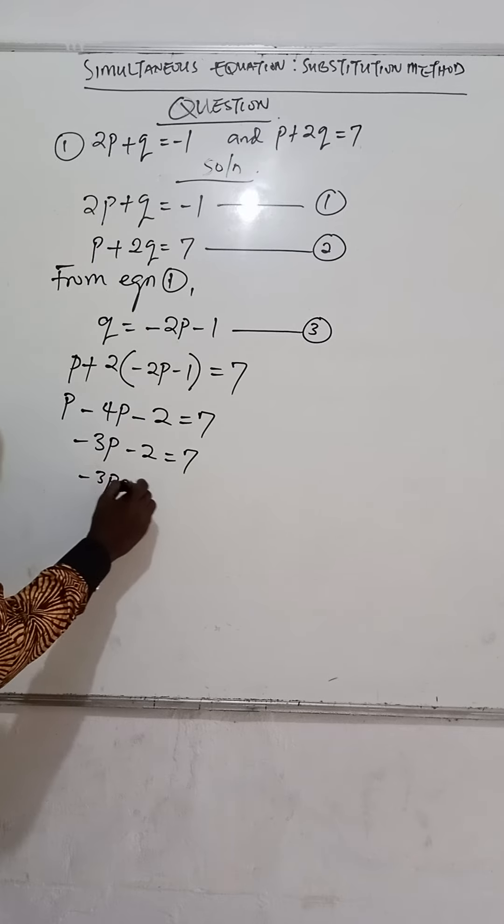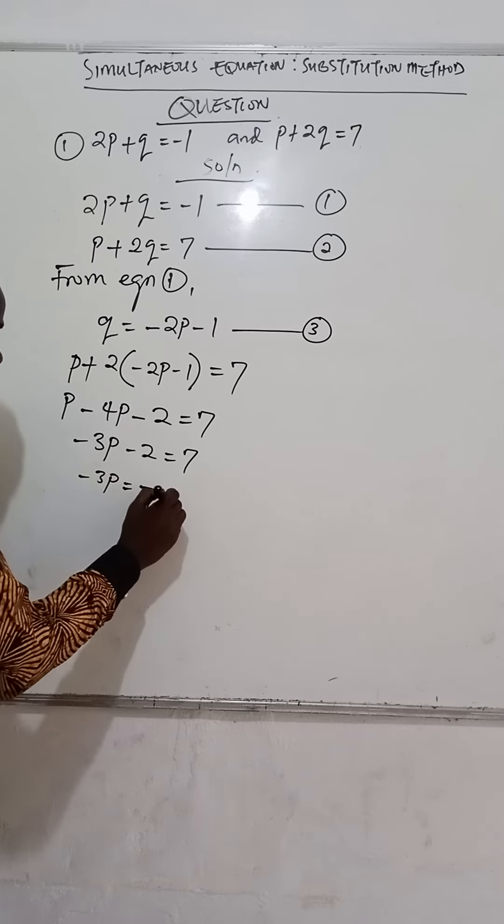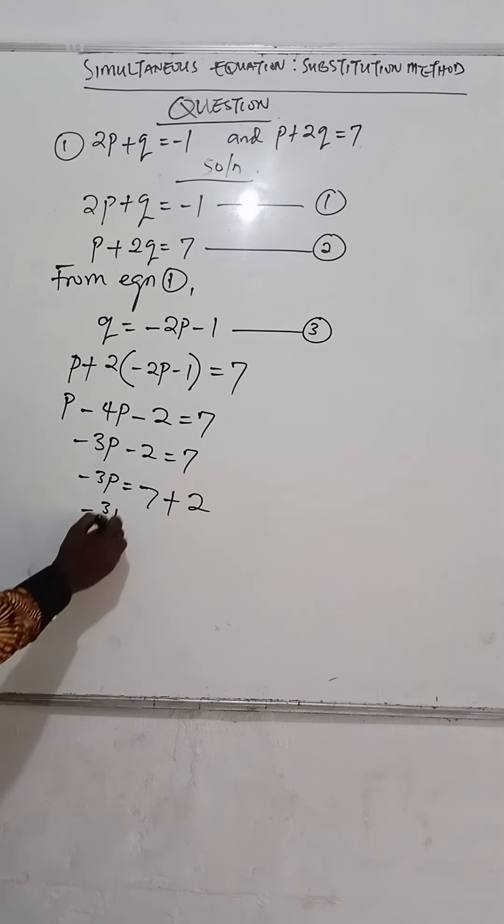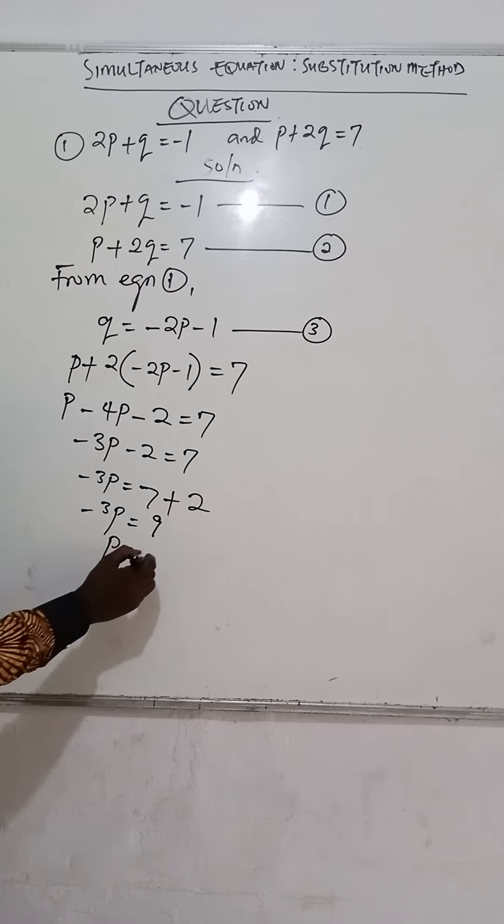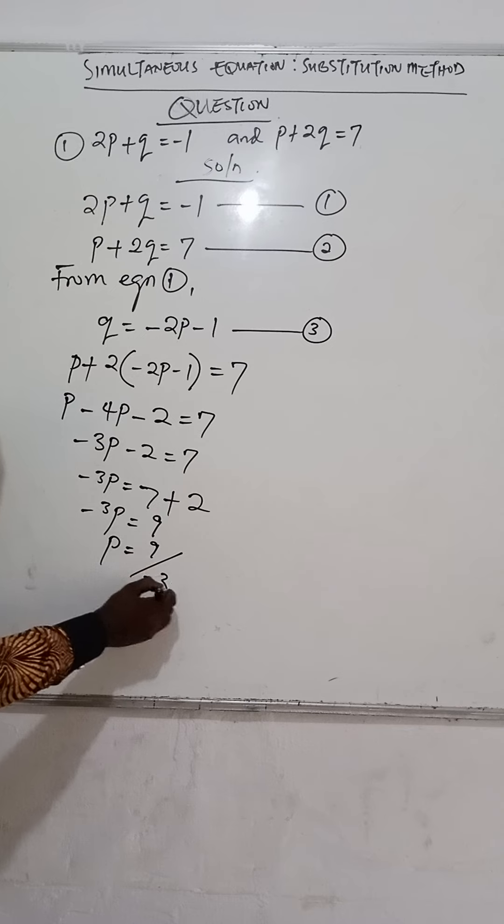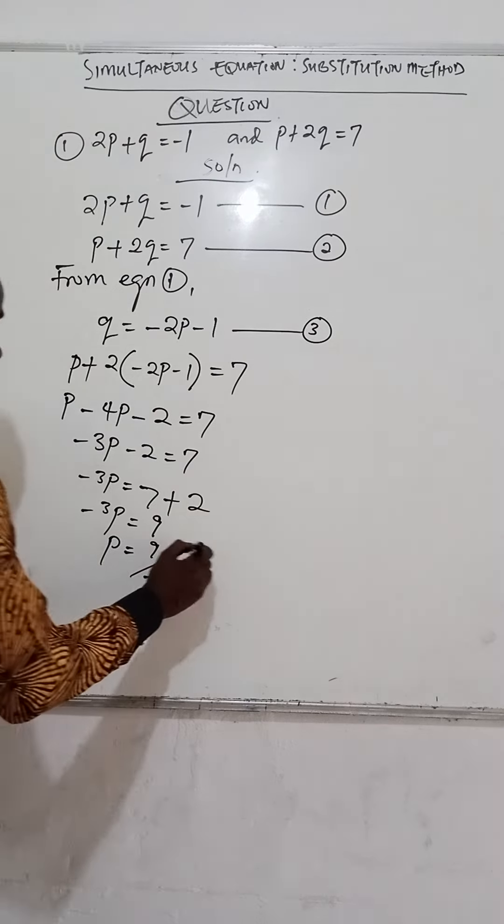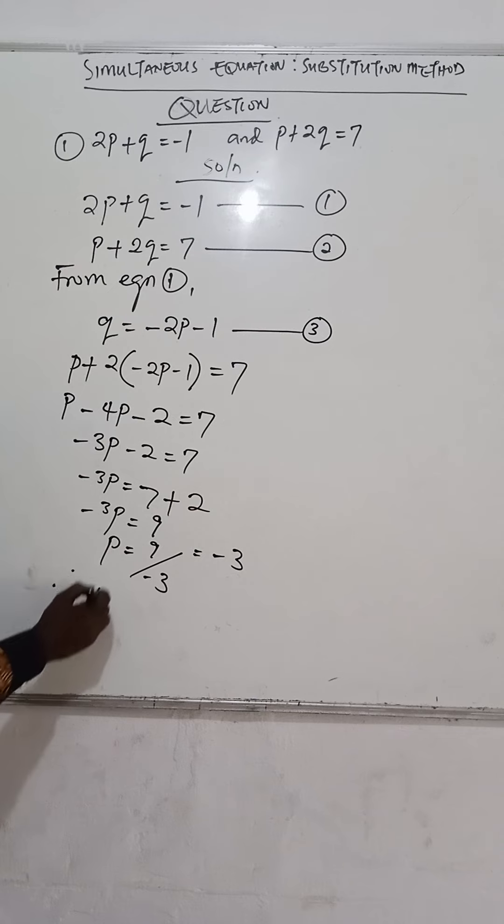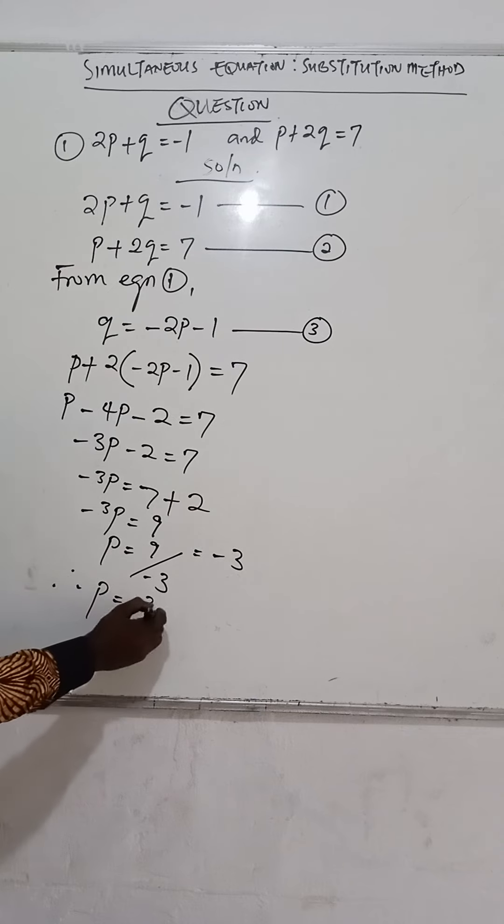p - 4p - 2 = 7. If we collect like terms, this becomes -3p - 2 = 7. So -3p = 7 + 2. -3p = 9. Dividing both sides by -3, we have 9 ÷ -3, which equals -3. Therefore p = -3.